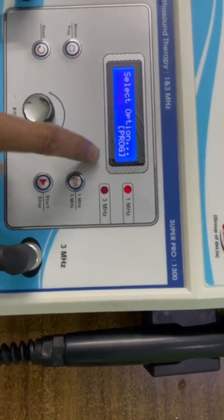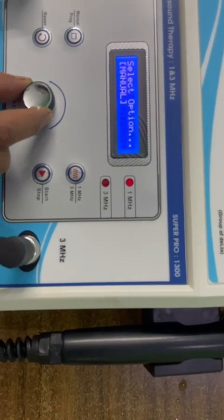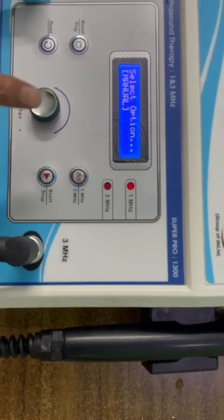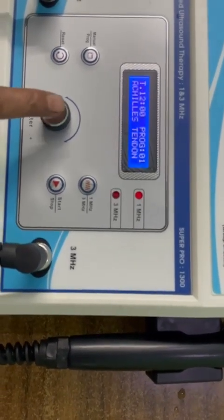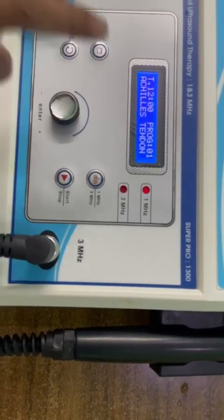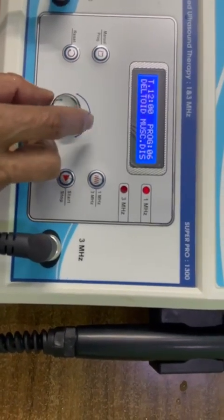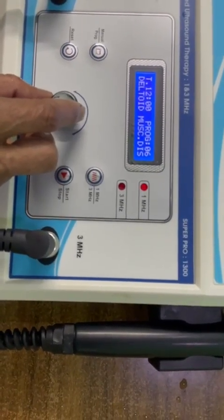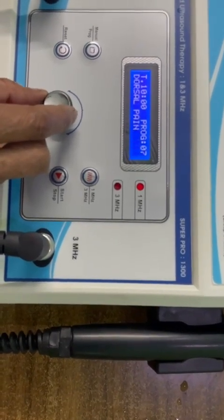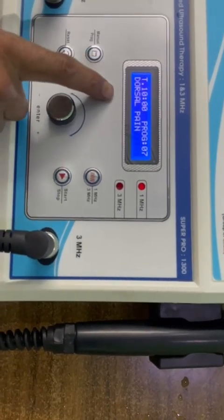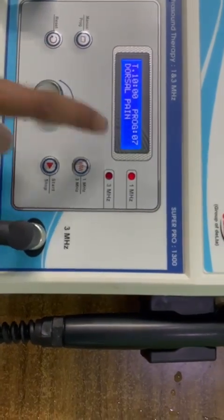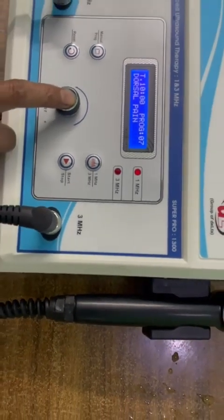Manual mode blinking. Now we can set it to program. Now program mode is blinking. Press it again. It has 30 programs. You can change the program as per your requirement. We set it dorsal pain, program number 7. Press it again.